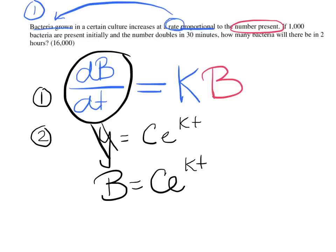Now that I have my general equation, I can actually start worrying about the numerical values in here. It says if 1,000 bacteria are present initially. Stop right there.